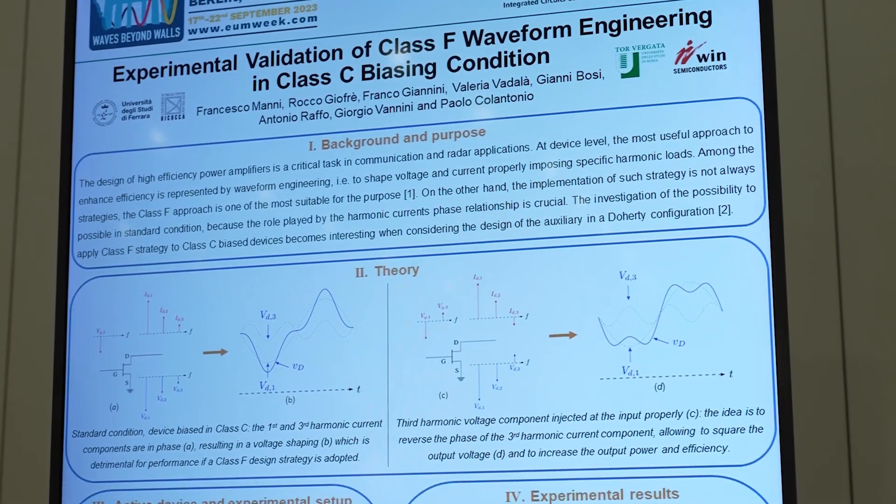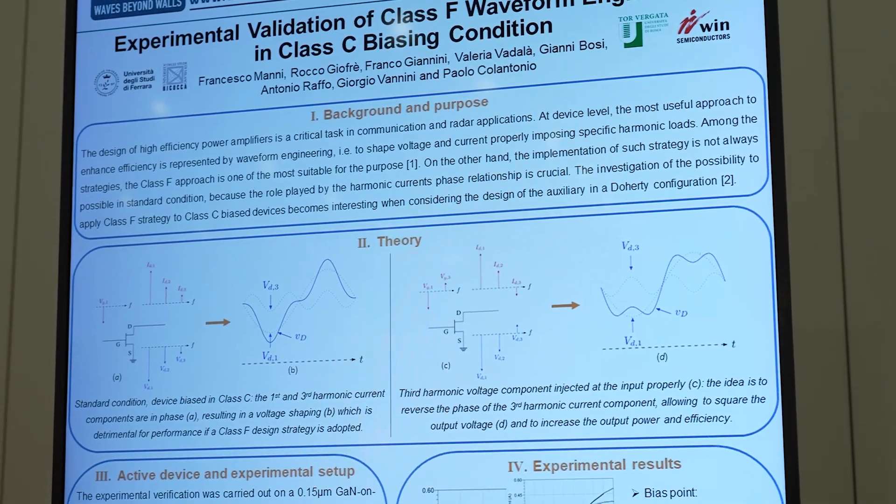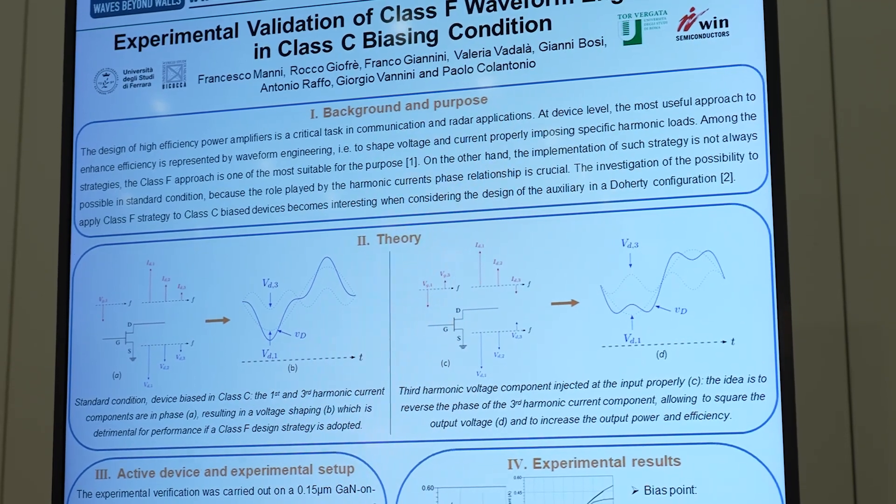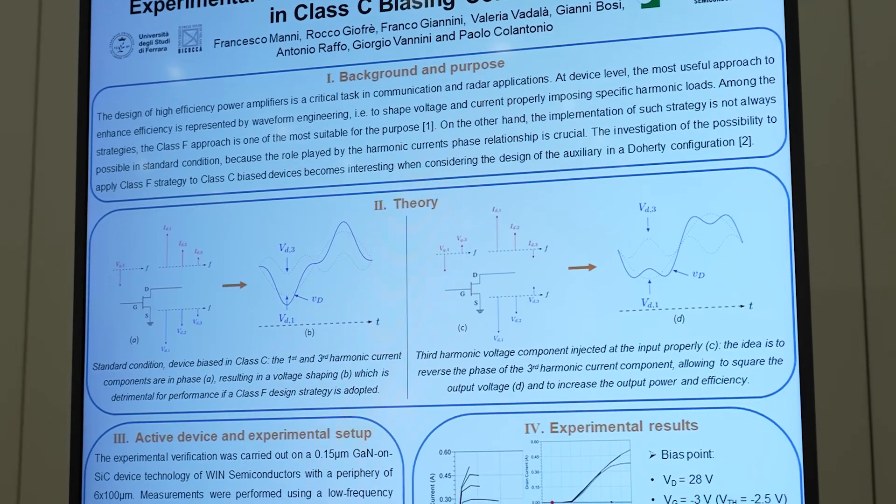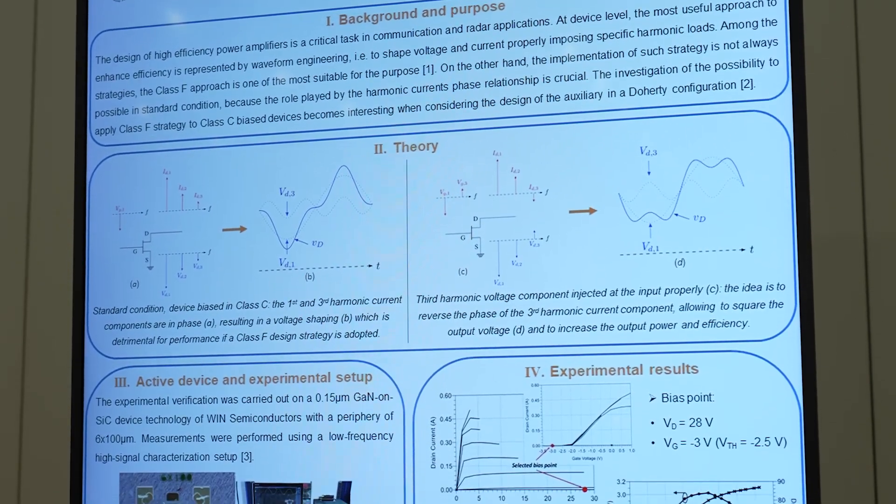So if we consider a Class C bias device, for example a field effect transistor with its simplified scheme, in sterile condition, so if a purely sinusoidal voltage is injected at the input,